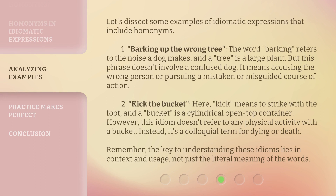Let's dissect some examples of idiomatic expressions that include homonyms. 1. 'Barking up the wrong tree.' The word 'barking' refers to the noise a dog makes, and a 'tree' is a large plant. But this phrase doesn't involve a confused dog — it means accusing the wrong person or pursuing a mistaken or misguided course of action. 2. 'Kick the bucket.' Here, 'kick' means to strike with the foot, and a 'bucket' is a cylindrical open-top container. However, this idiom doesn't refer to any physical activity with a bucket. Instead, it's a colloquial term for dying or death. Remember, the key to understanding these idioms lies in context and usage, not just the literal meaning of the words.